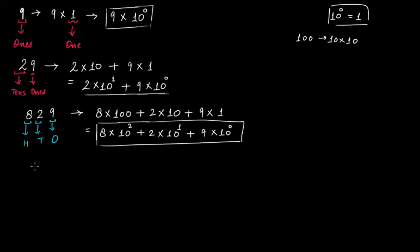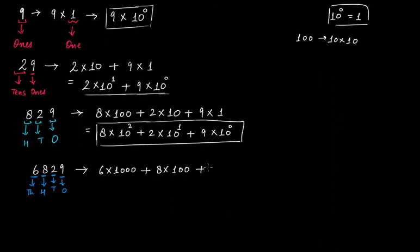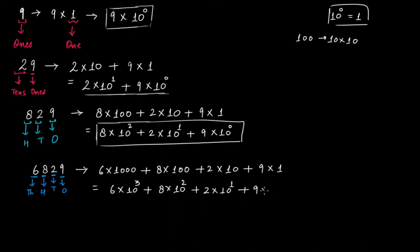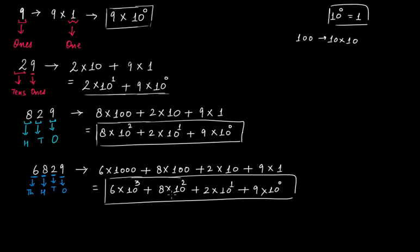Let's say we have the number 6829. We have a 1's place, a 10's place, a 100's place, and now a 1000's place as well. This number can be written as 6 times 1000, because the multiplication factor for the 1000's place is 1000, plus 8 times 100, plus 2 times 10, plus 9 times 1. In exponential form: 6 times 10 to the third power, plus 8 times 10 to the second power, plus 2 times 10 to the first power, plus 9 times 10 to the exponent 0.